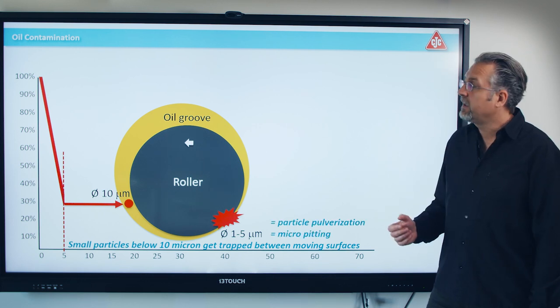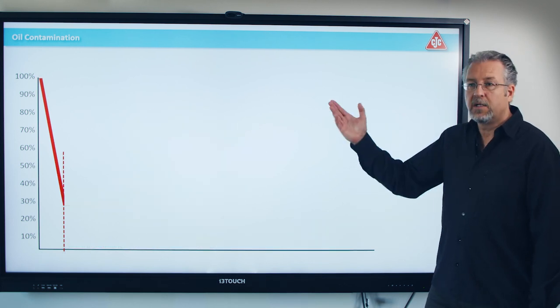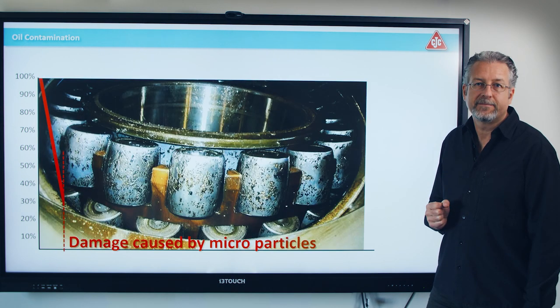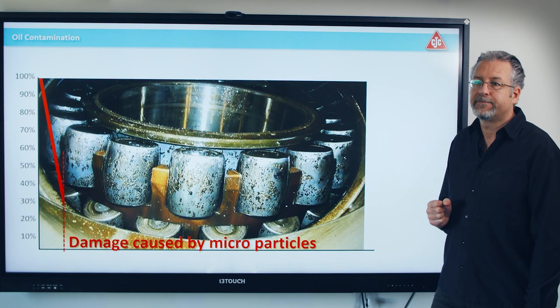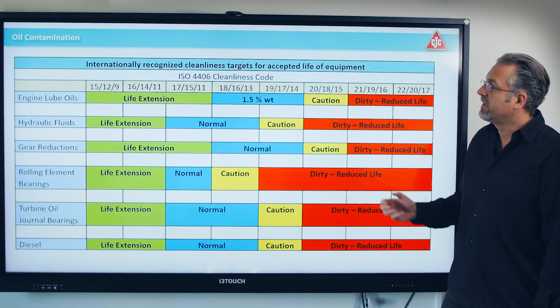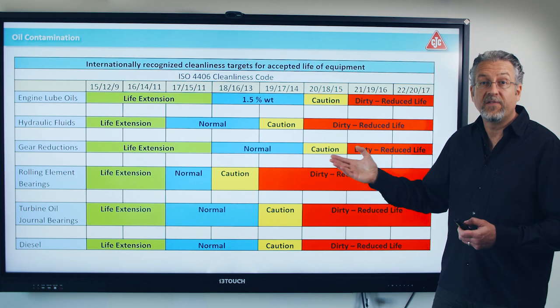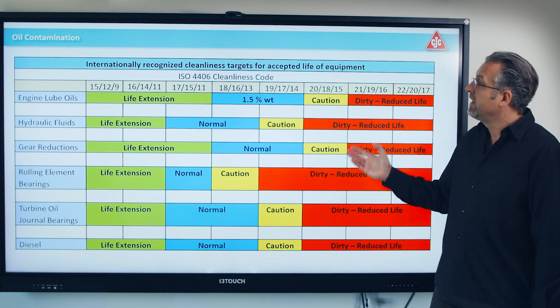So the particle will be polarized and creates micropitting and wear. And micropitting and wear looks like this in a bearing — this is why you need to focus on very clean oil.